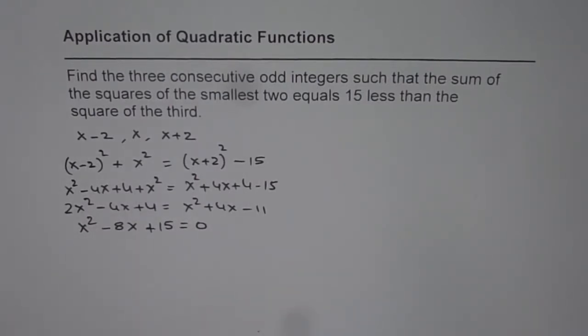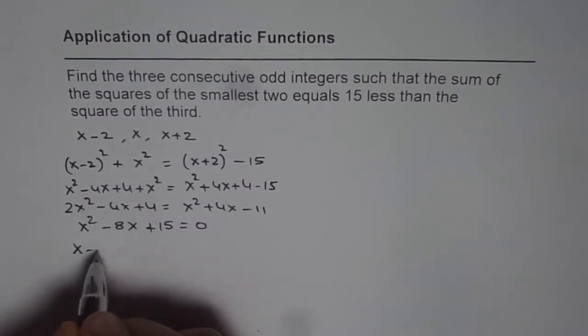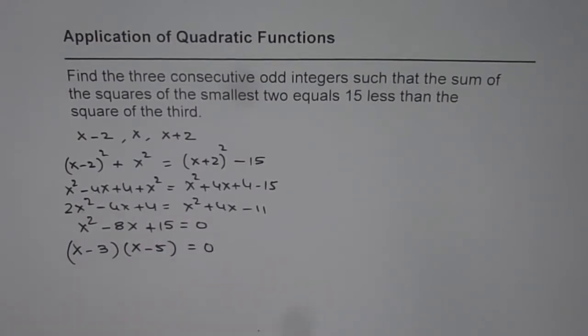That is the equation we have and we can solve for x by factoring. Taking 5 times 3 is 15, both negative, we have (x-3)(x-5) = 0. That gives us two answers: x = 3 and x = 5.